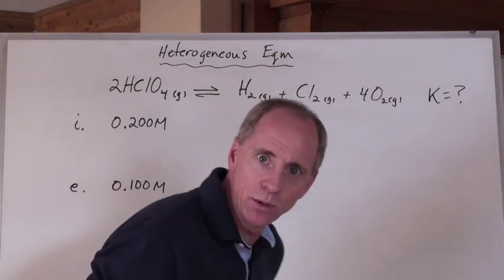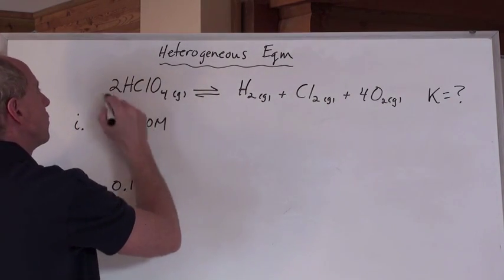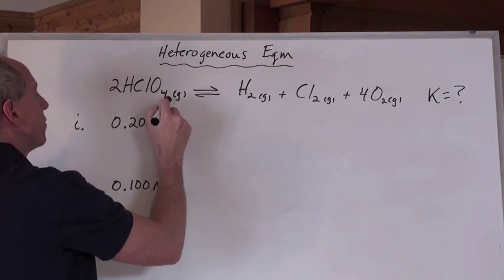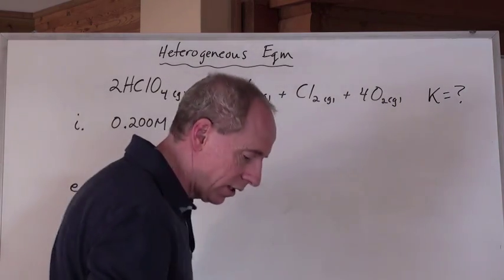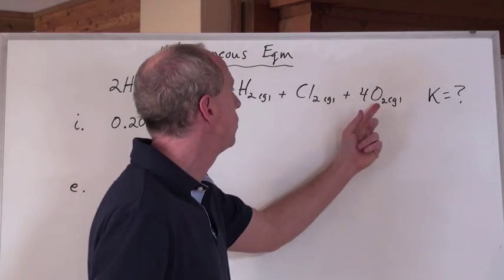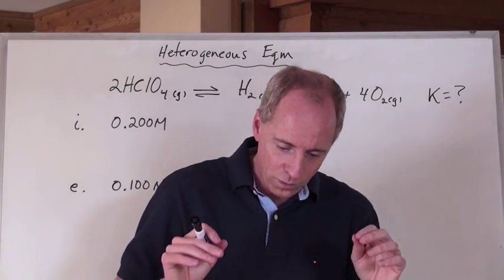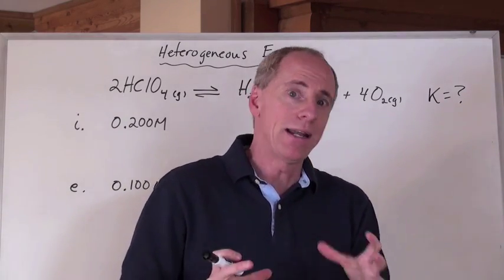Initially, not at equilibrium, but initially, we have a concentration of this chemical in a flask, the HClO4 gas, and we know that it's going to decompose in this certain situation into H2 gas, Cl2 gas, and oxygen gas, into its elements. That's what's going to happen, but it hasn't happened yet.